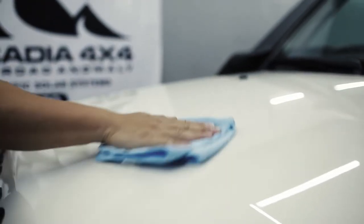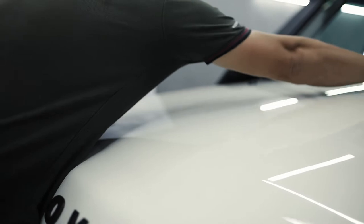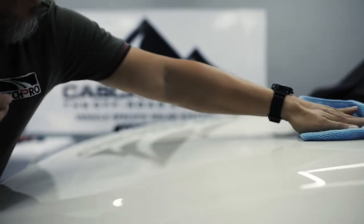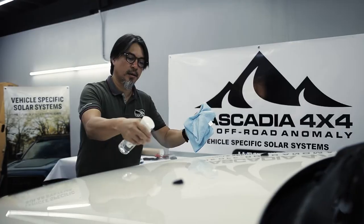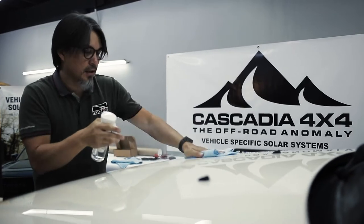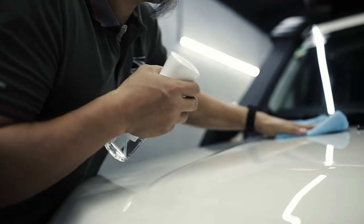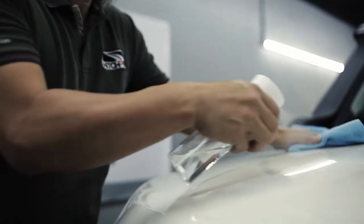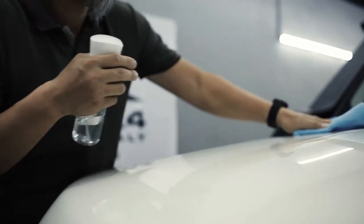First, clean the surface of the hood or bonnet to make sure it's super clean. After initial cleaning, the next step is to clean with isopropyl alcohol just on the area where we're going to